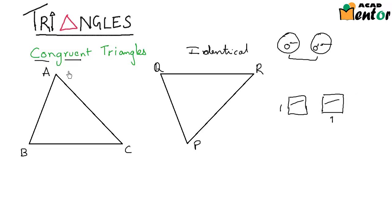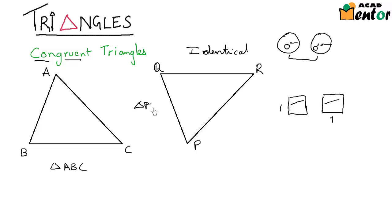Now what about triangles? Let's look at these two figures. The first one is triangle ABC and the other triangle is triangle PQR. We have to see if they are identical or not.